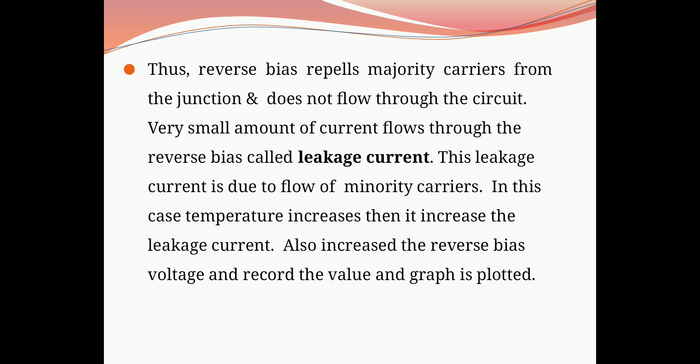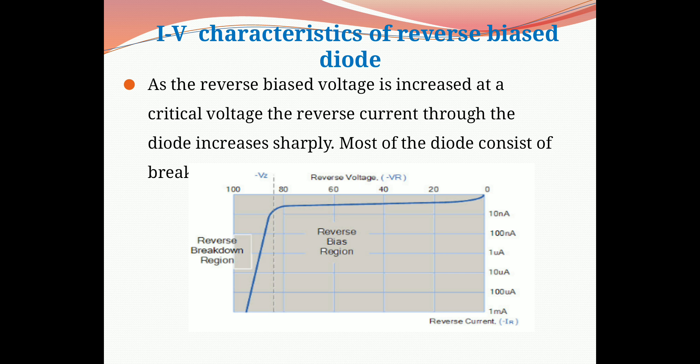If the reverse bias voltage applied on the PN junction diode is further increased, even more free electrons and holes are pulled away from the junction, increasing the width of the depletion region. The width of the depletion layer increases with increase in voltage. The wide depletion region completely blocks the majority charge carriers, and hence majority charge carriers cannot carry the electric current.